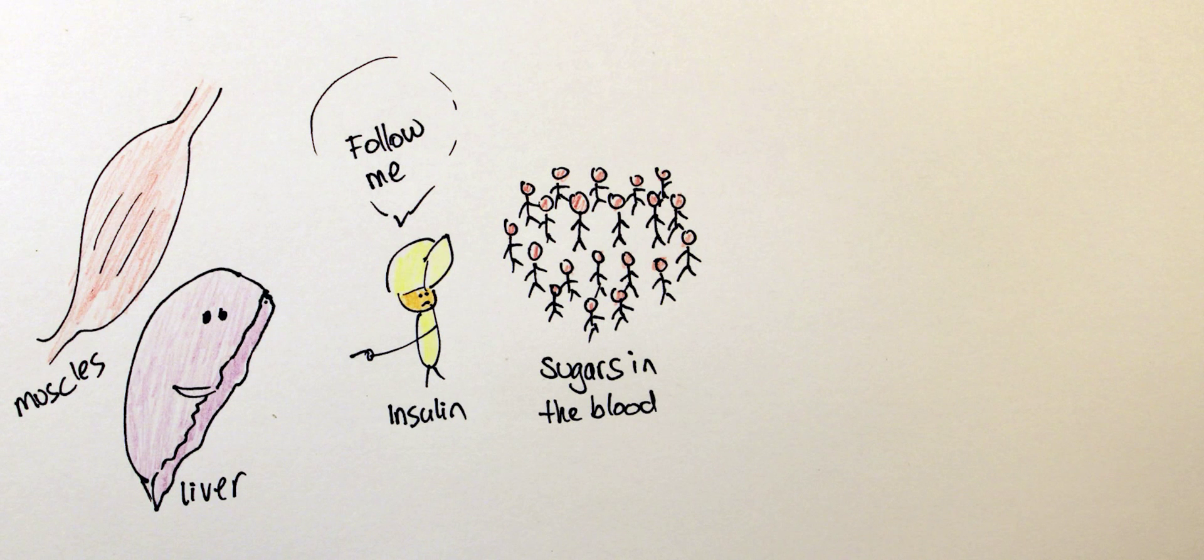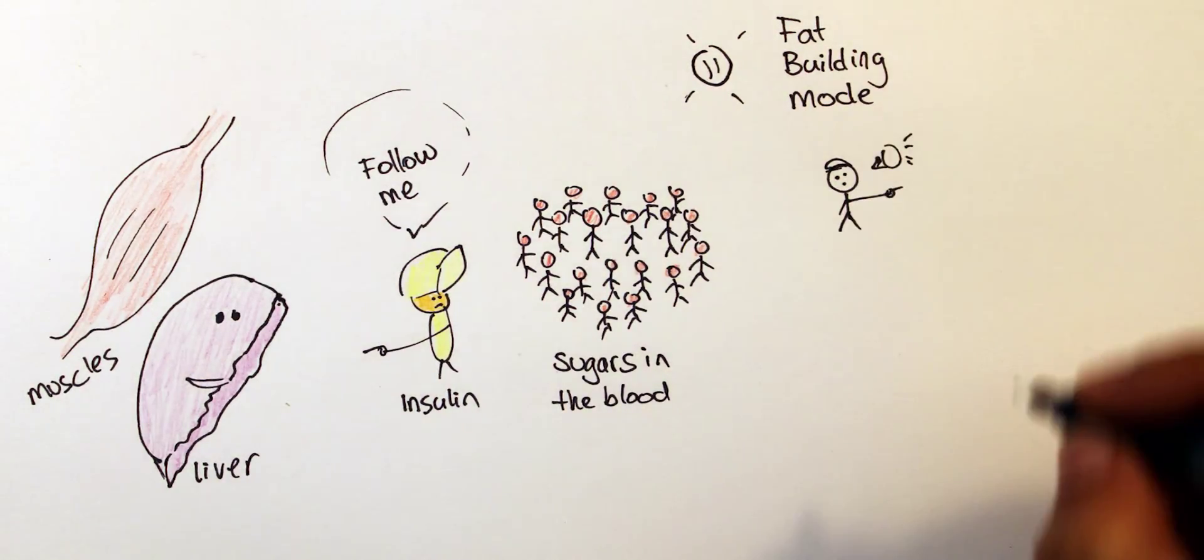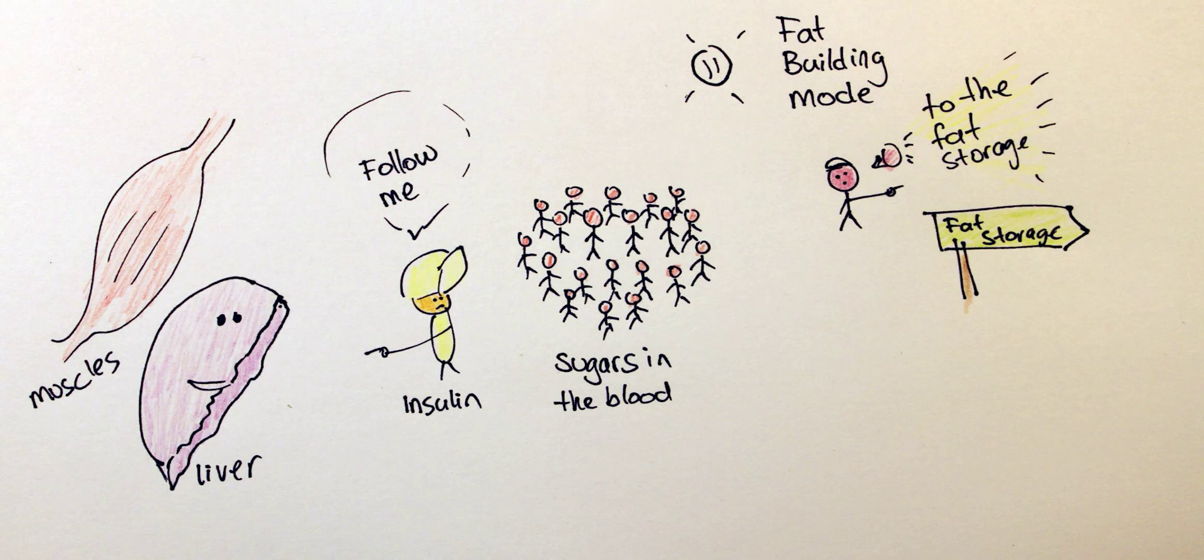However, the body has a limit to the amount of glycogen it can store in the liver and muscles. Beyond this limit, your body enters an insulin-driven mode where sugars are converted directly into fat. When stress is chronic, this mode becomes always turned on, making it indeed much harder for the stressed person to lose weight.